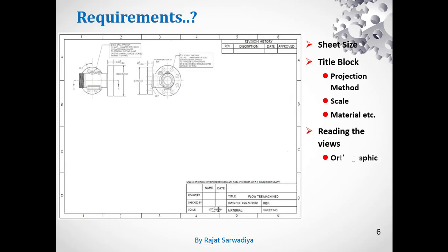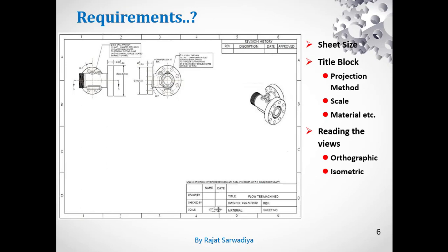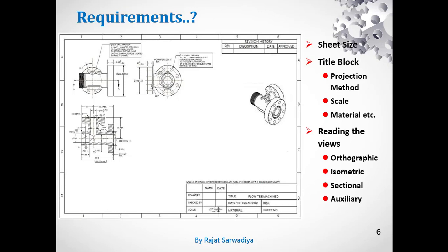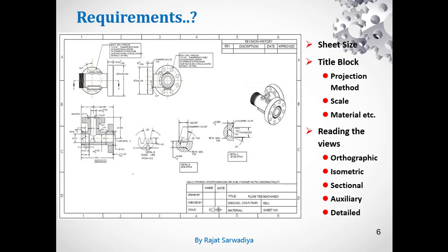The types of views are: orthographic views (which include front, top, left-hand side, right-hand side, and bottom views), isometric views, sectional views (showing internal cutouts and features), auxiliary views (showing features at certain angles), and detailed views (used to highlight small portions or sections that need to be emphasized).